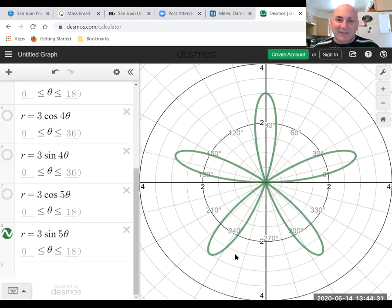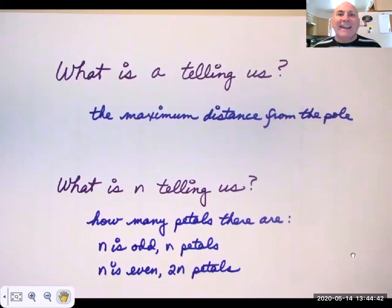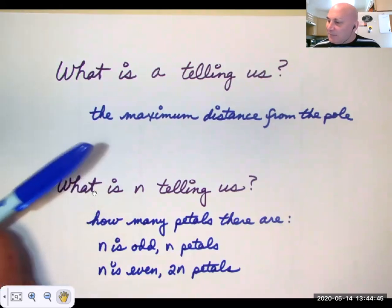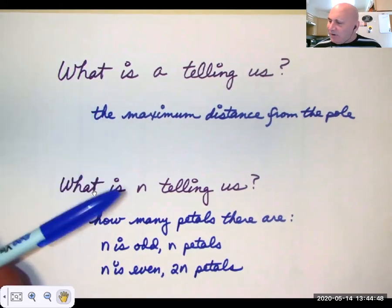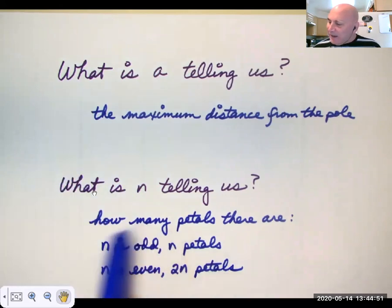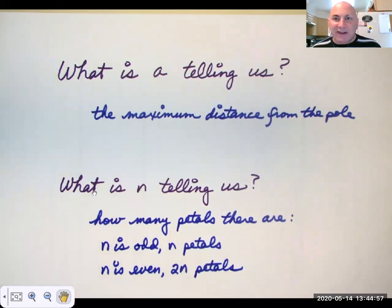So what is a telling us? a is telling us the maximum distance from the pole. And what is n telling us? Well, when n was odd, there were n petals. When we had sine or cosine of 3 theta, we had 3 petals. When we had sine or cosine of 5 theta, we had 5 petals. When n is even, we had 2n petals. So when n was 2, we had 4 petals. When n was 4, we had 8 petals.